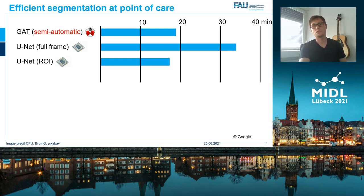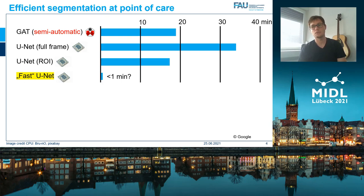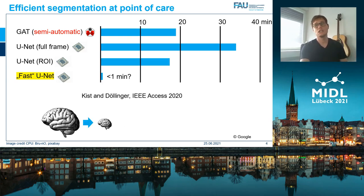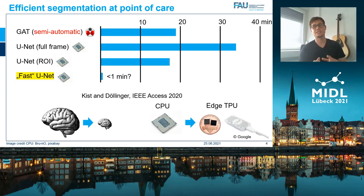We asked if we are able to create a fast U-Net variant that takes less than a minute for the same amount of frames and runs also on the CPU. This is what we investigated in a recent published study. We tackled this problem in two ways: first, we made the network smaller, and second, we used an inexpensive hardware accelerator, namely the TPU, to perform this task.